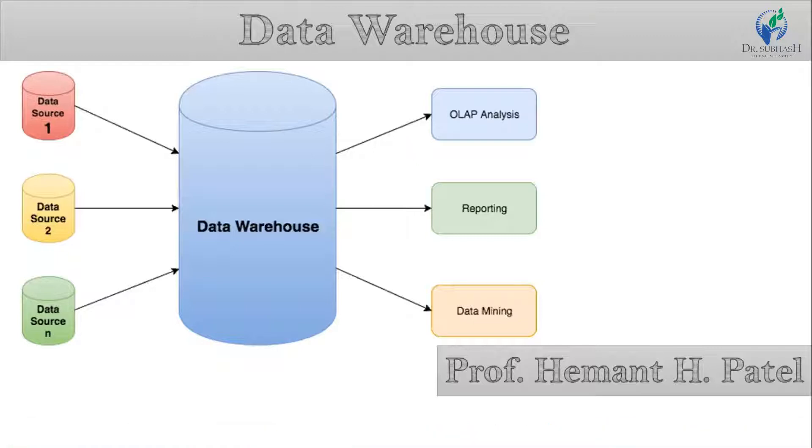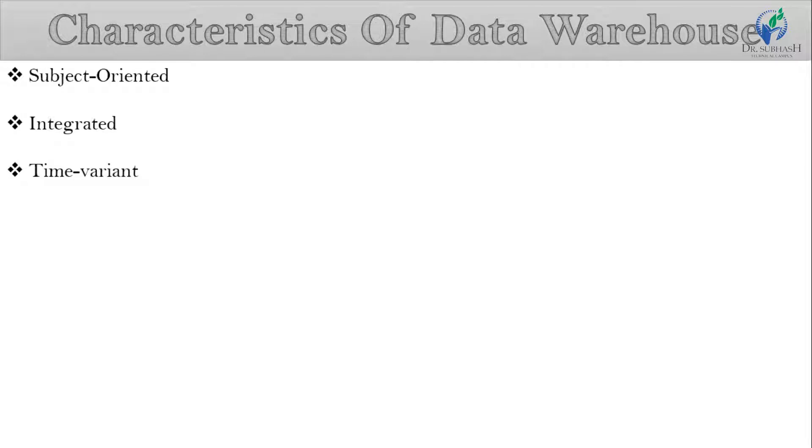Now based on that I start our session on characteristics of data warehouse. A data warehouse has the following characteristics: first is subject-oriented, next is integrated, next is time variant, and next is non-volatile. I will discuss these characteristics one by one.